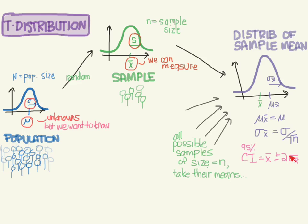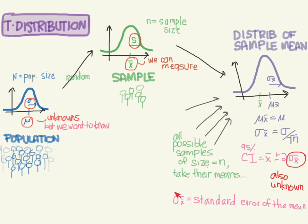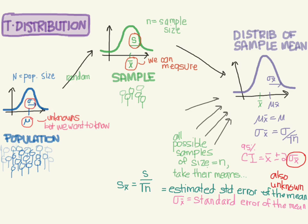The best estimate for the standard error that we have is the standard deviation from the sample. So we called sigma sub x-bar the standard error of the mean, and the estimation of this is going to be called the estimated standard error of the mean. This is denoted as s sub x-bar, and it is equal to s over the square root of the sample size.